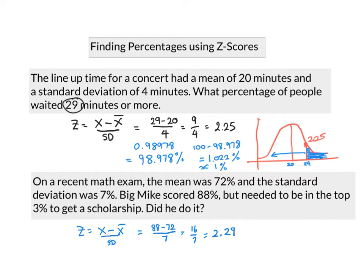Now the question says he needs to be in the top 3%. So we're looking at our bell graph. The top 3% would be this bit here, which means that this bit must be 97%. And if we go back to this one here, the Z score of 1.885 is going to be here. So this score that we've got of Big Mike, which was 2.29, is definitely inside the 3%. So the answer is yes, he did get his scholarship money. Well done, Mike.